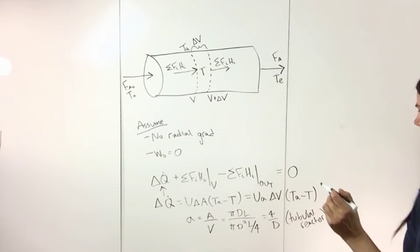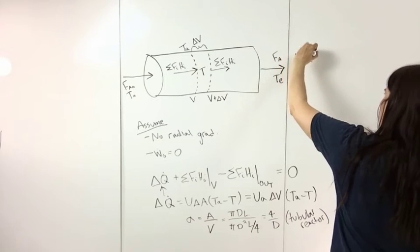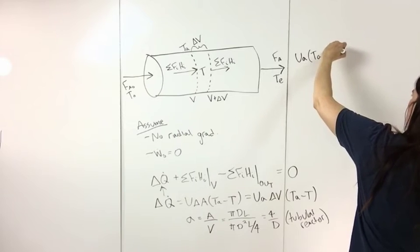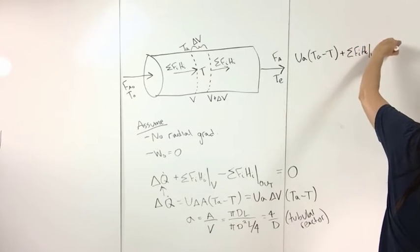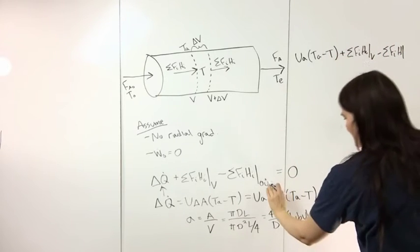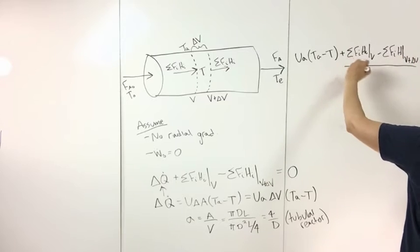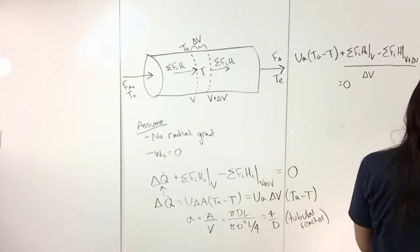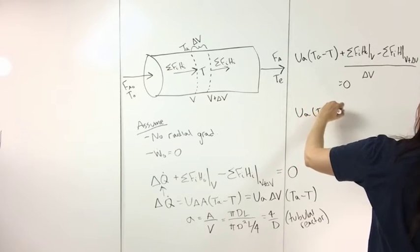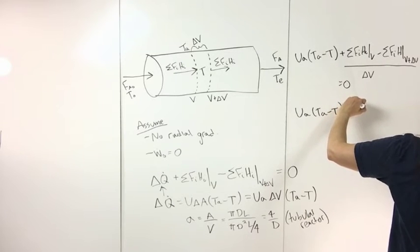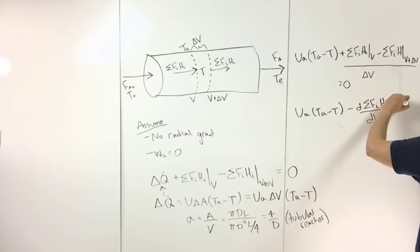We also divide by delta V. Doing that gives us U A (T_A minus T) plus F_I H_I evaluated at V minus F_I H_I evaluated at V plus delta V, all over delta V, and this equals zero. This can be rewritten as U A (T_A minus T) minus d(sum of F_I H_I)/dV equals zero.